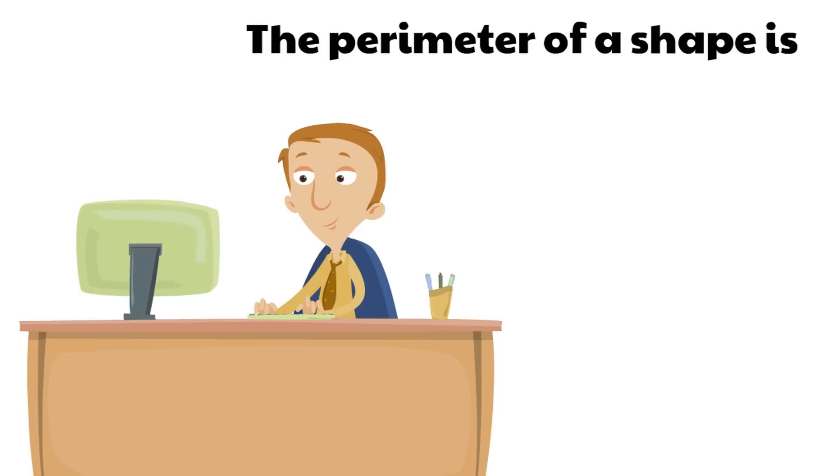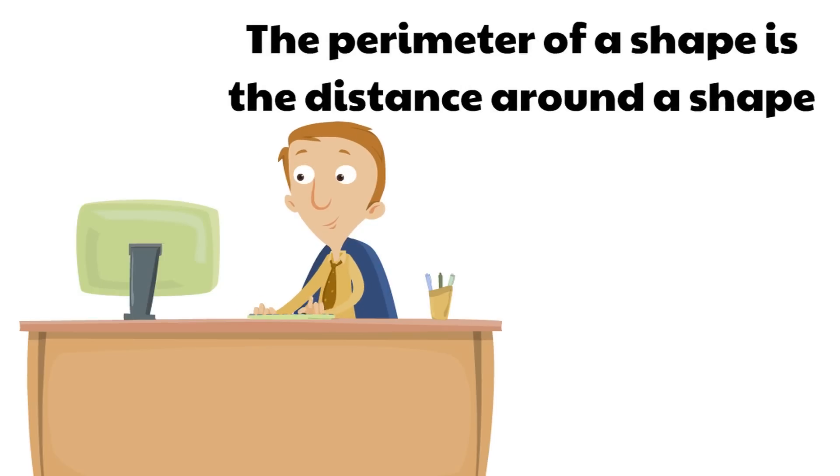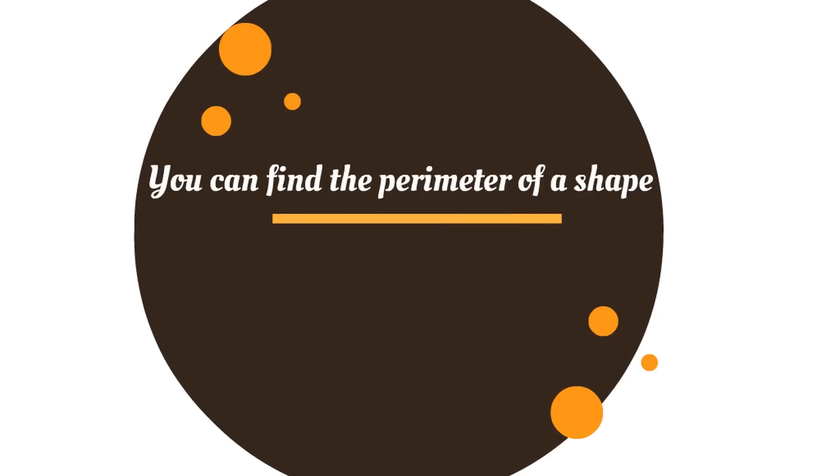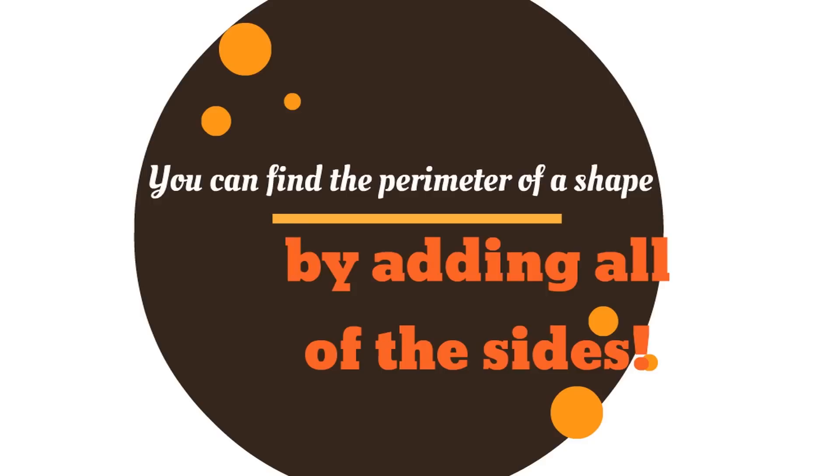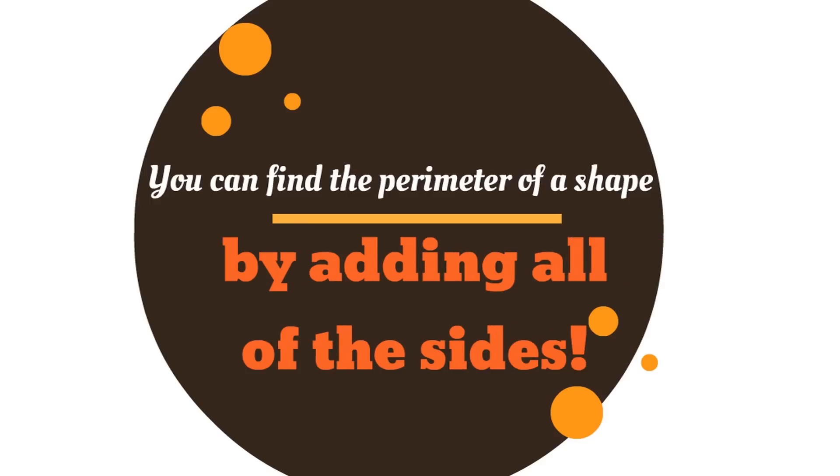The perimeter of a shape is the distance around a shape. And it's easy to find. You can find the perimeter of a shape by adding all of the sides. That will tell you what the distance around the shape is.